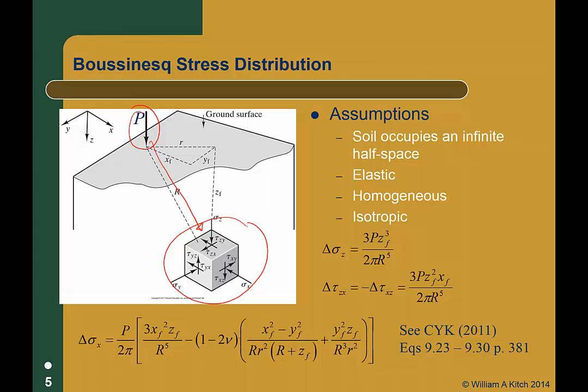The equations given here can be used to compute the induced stresses at any given point in the half space due to the applied point load. Your text contains equations for other induced shear stresses and normal stresses due to the applied point load. This solution is named after Joseph Boussinesq, a French mathematician who solved this problem back in 1885.